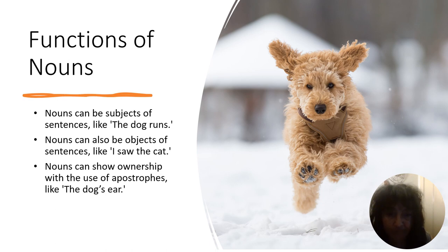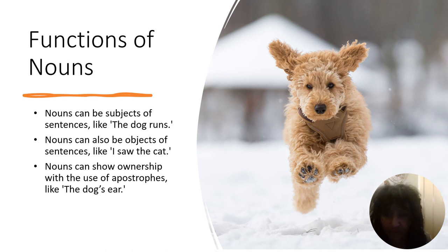Nouns can also be objects of sentences, like 'I saw the cat.' Nouns can show ownership with use of apostrophes. For example, 'the dog's ear.' So when you're looking at the dog and you want to talk about this particular dog's ear, you would write it as 'the dog's' with an apostrophe S, ear.